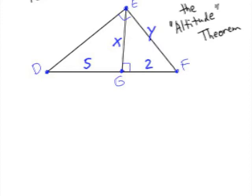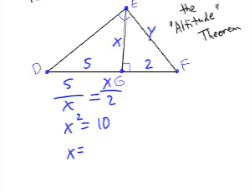By the theorem that we call the altitude theorem, the altitude is the geometric mean between the two parts of the hypotenuse. We know that we can write the proportion where X is in the lower left, upper right, because it's the geometric mean between the 5 and the 2. When we cross multiply, I get X squared equals 10, and X would be the square root of 10, or about 3.16.